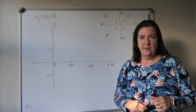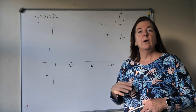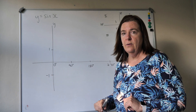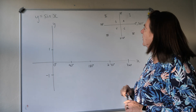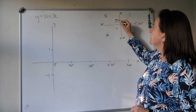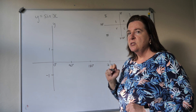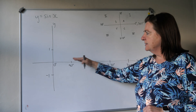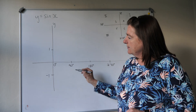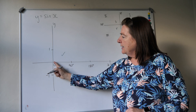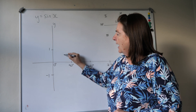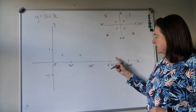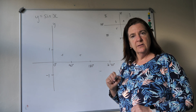We've already done the CAST diagram, showing where the different ratios are positive. If we start with y equals sine x, we already know that sine is positive in the first and second quadrant — in other words, between 0 and 90 degrees and 90 and 180 degrees. Translating this to an x and y axis, any angle between 0 to 90 and 90 to 180, our sine graph should be positive, and between 180 and 360, the graph should be negative.